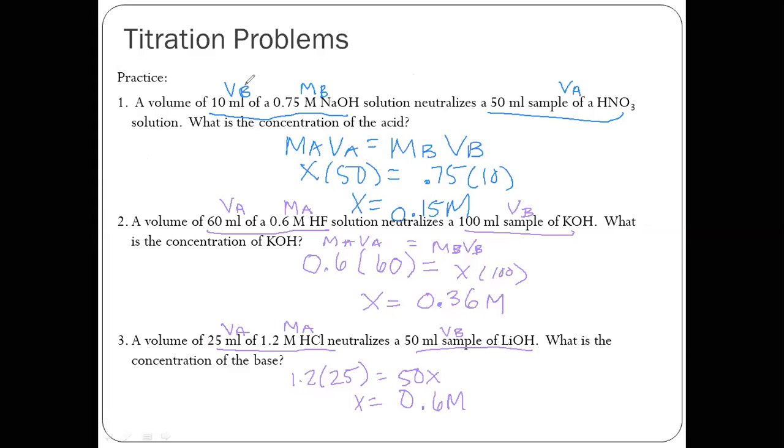So basically you're just going to go through and identify, are they acids and bases? And what are you missing? So the first set of numbers you get go with the base, 10 mils is your VB, MB is 0.75. And then over on the side, you're given your VA. So you're solving for MA. So X times 50 equals 0.75 times 10, divide both sides by 50 and you get 0.15 molar.